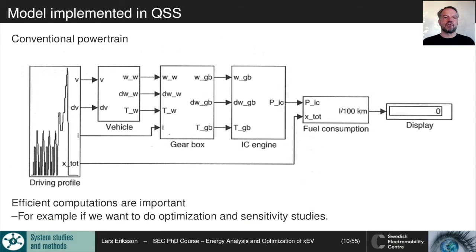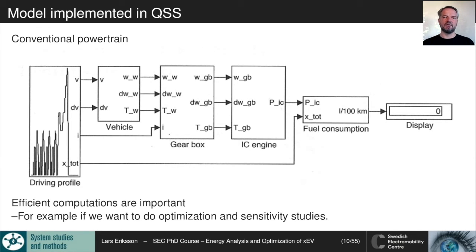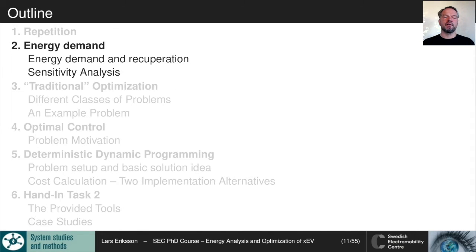We also looked at the inverse modeling approach, which was an eye-opener: you work with the driving cycle and trace back through the vehicle model to see what fuel a particular vehicle requires for that driving profile. This gives very efficient computations and exact cycle following, which is useful for optimization and sensitivity studies, such as seeing how a parameter change affects fuel economy. Now we will connect this analysis to the hybrid electric vehicle and look at improving fuel economy through regenerative braking.